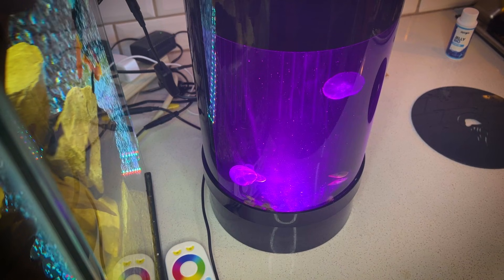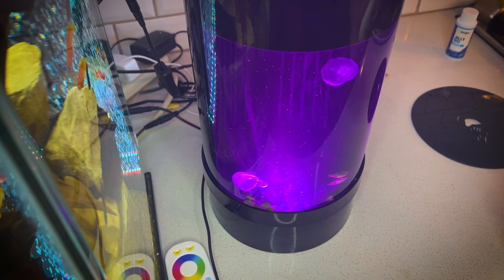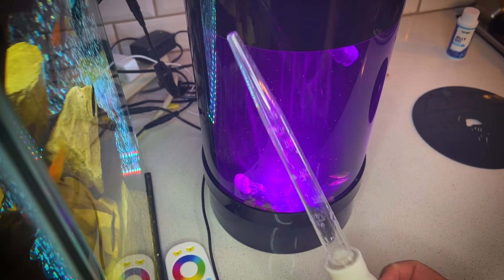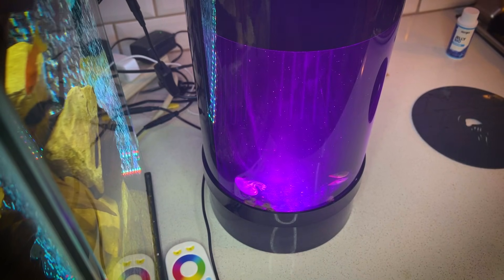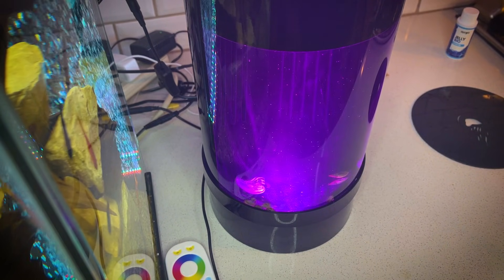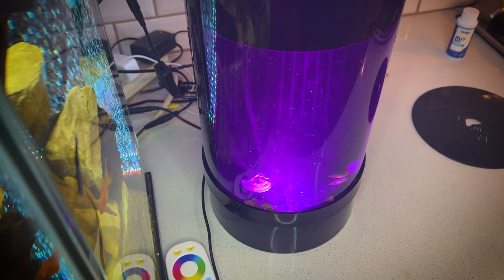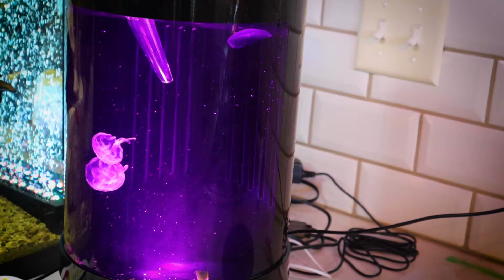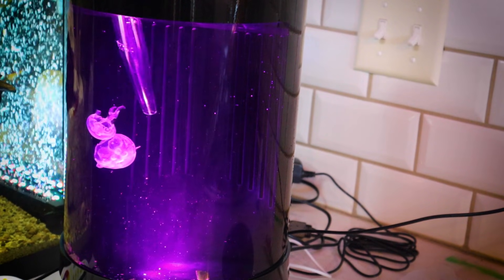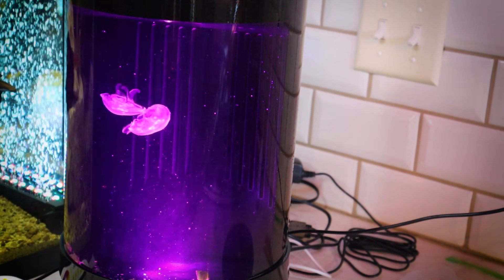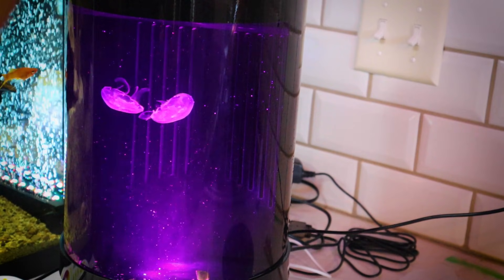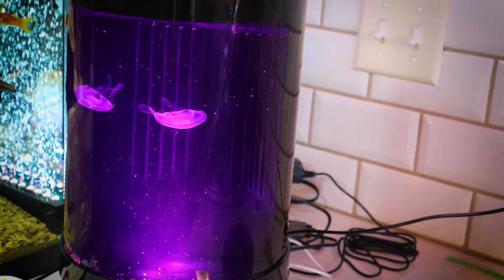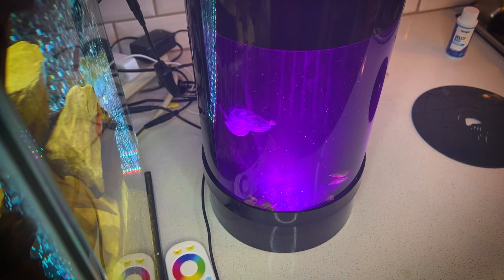If there are bubbles, the easiest way to get rid of them is to use a turkey baster like this and just simply go in, fill this turkey baster up with water from the tank, and then just start getting the bubbles out. This will release the bubbles off the side, off the glass, off the back, and allow them to move to the surface of the water, keeping these jellies nice and safe.